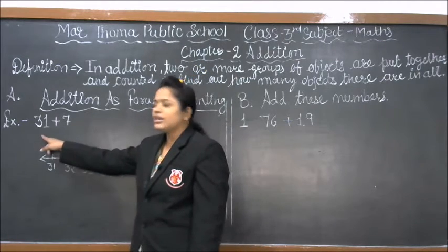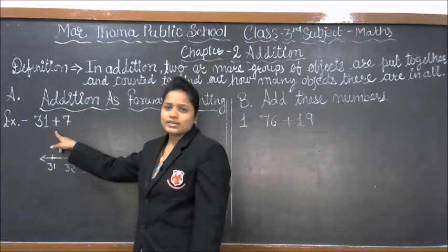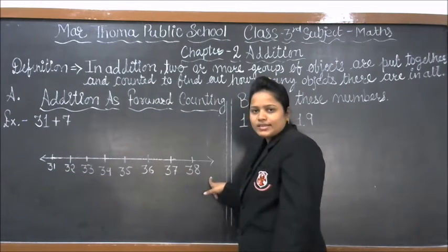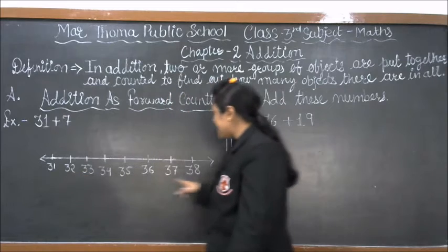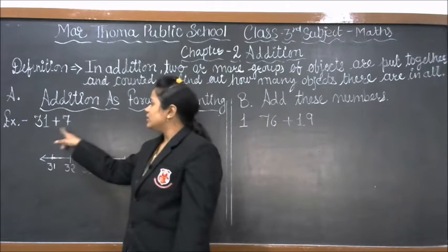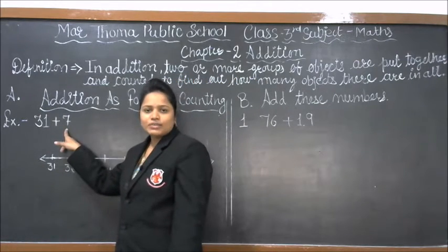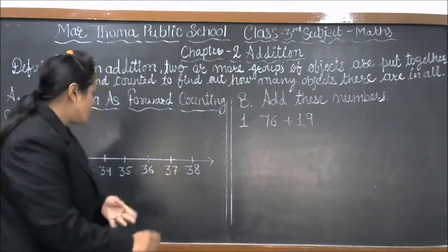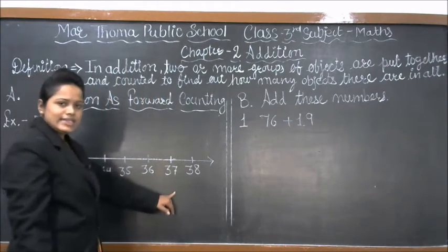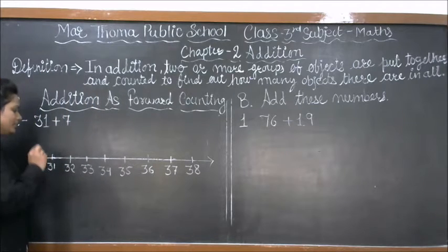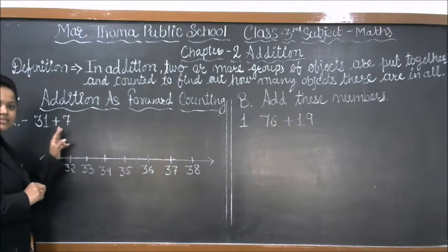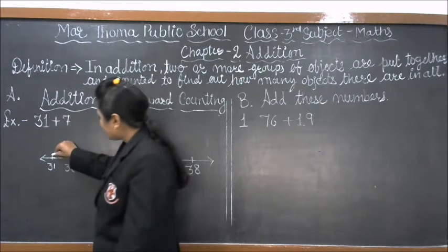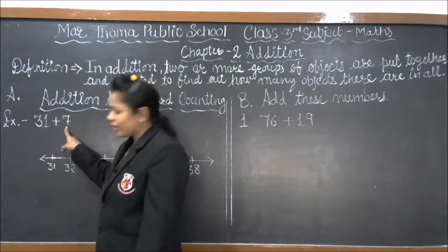For example, if we have 31 plus 7, we have to make a number series like this. We have to count 7 numbers forward from 31. So in forward counting, we make a series like this and we jump 7 times from 31.